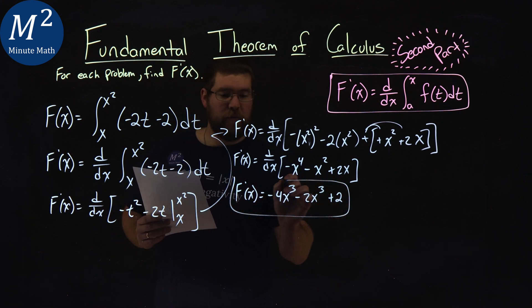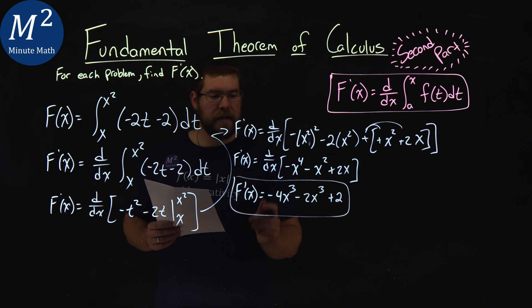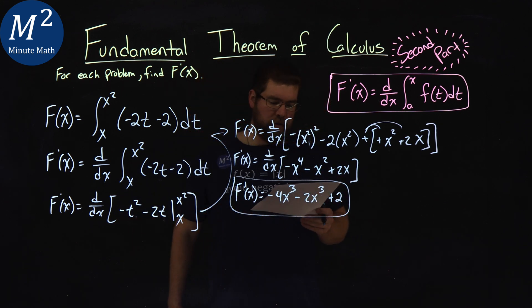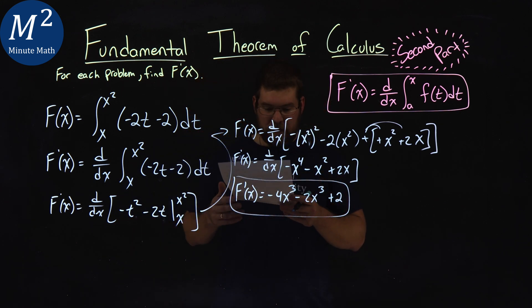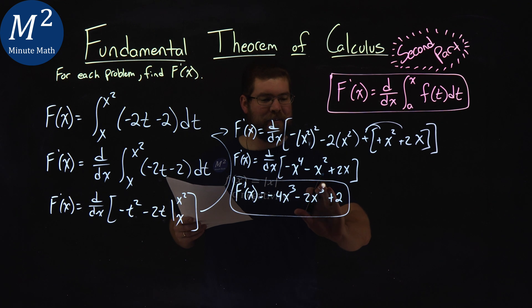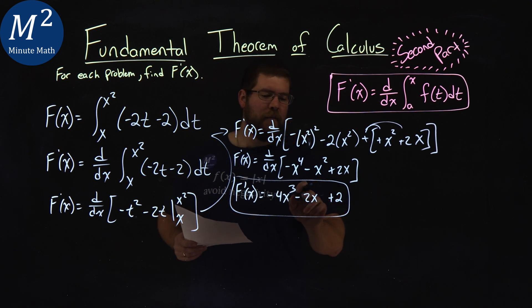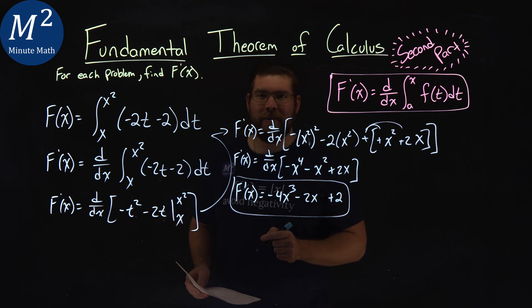Our final answer for f prime of x is equal to negative 4x to the third minus 2x cubed. Let's see, it's just 2x. Why did I say cubed? I was integrating. Sorry. Minus 2x plus 2. And if you caught that mistake, let me know down in the description below.